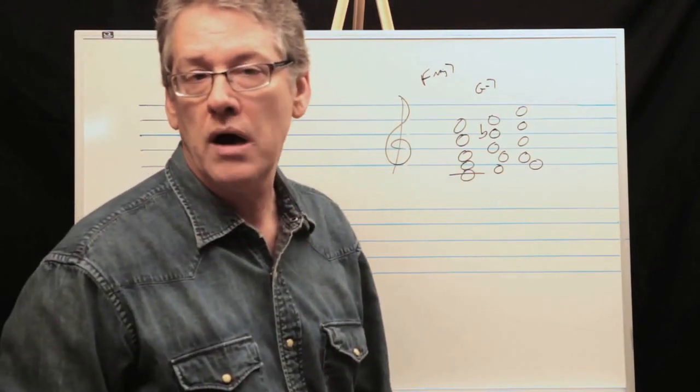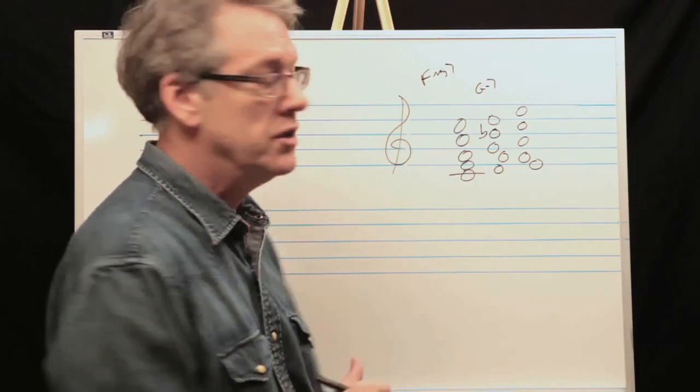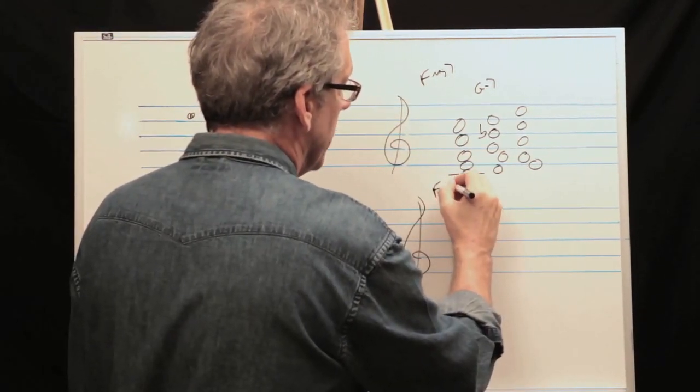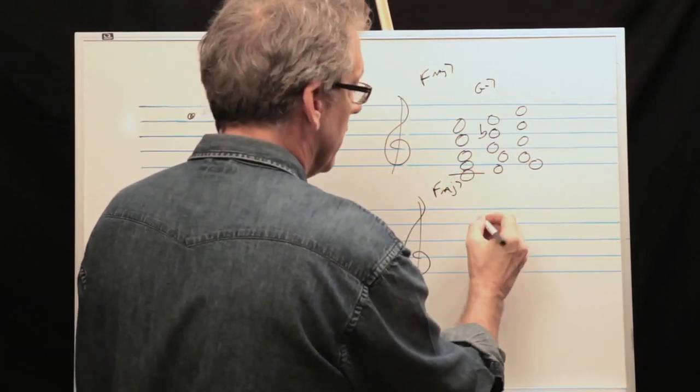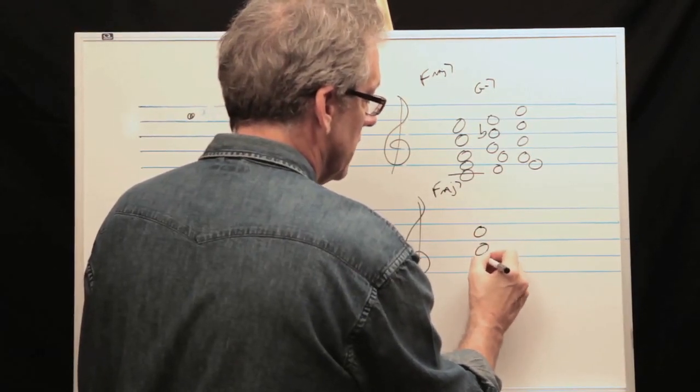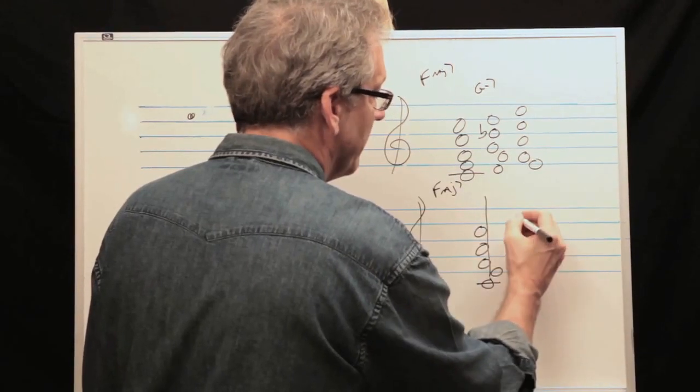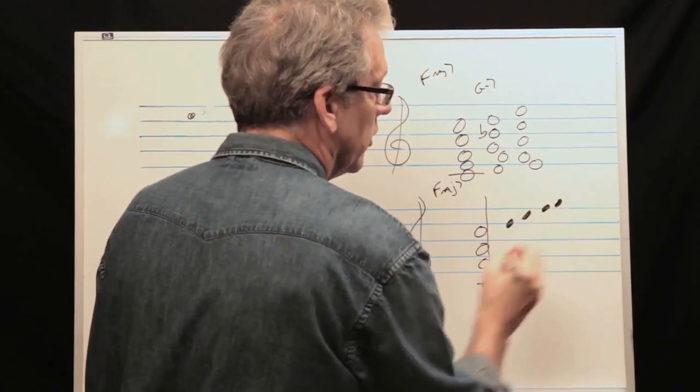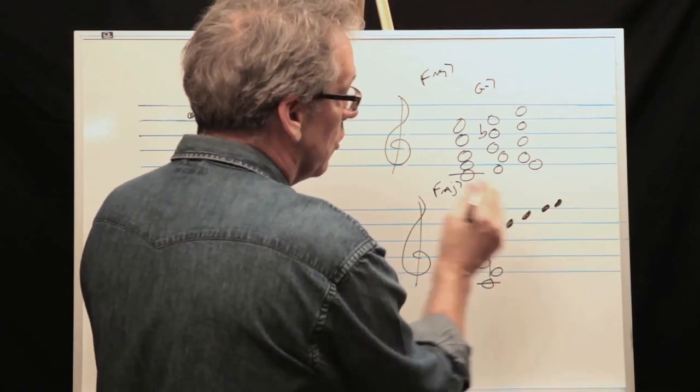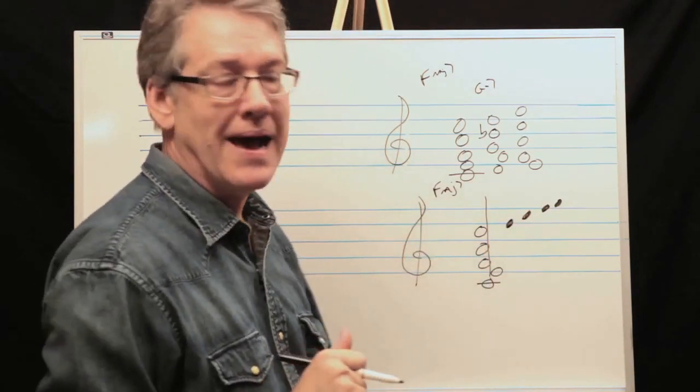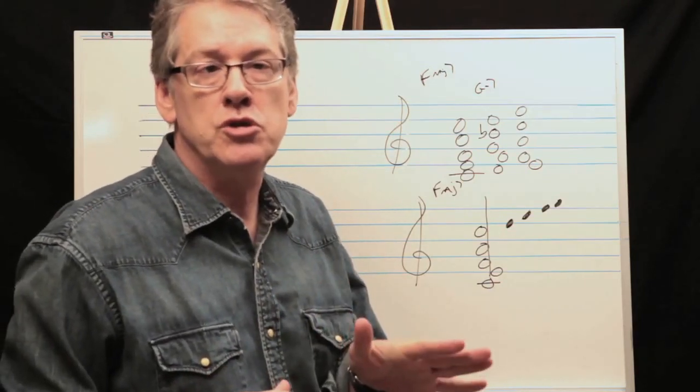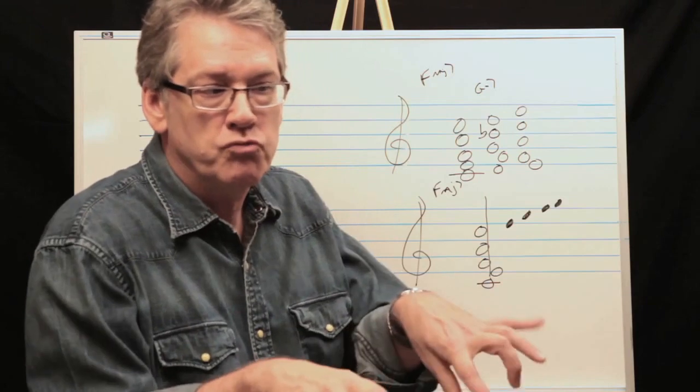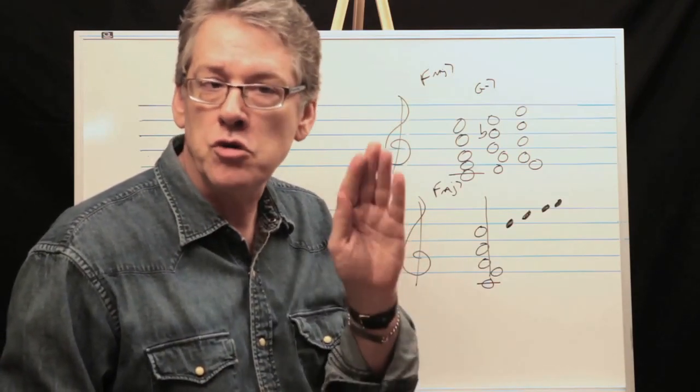So let's try a diminished passing. Here's a treble clef down here, and let's stay with F major seventh. Let's say our melody note is C. This time we're going to use a diminished passing. The only problem with diminished is anytime you use a diminished chord it doesn't define key center. Diminished chords are ambiguous, they don't really define anything. And if you look at it closely you'll discover that there's only three diminished chords, everything else is an inversion.